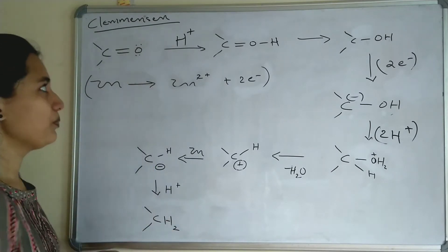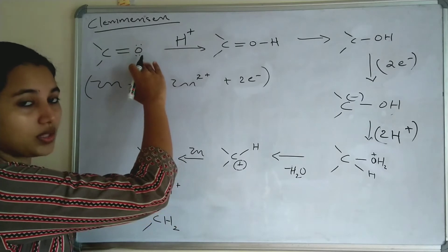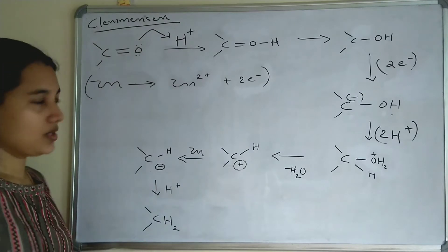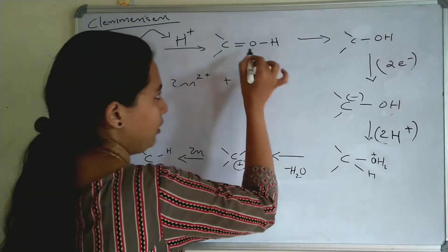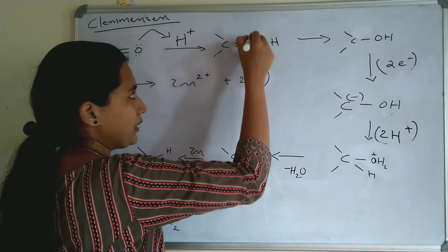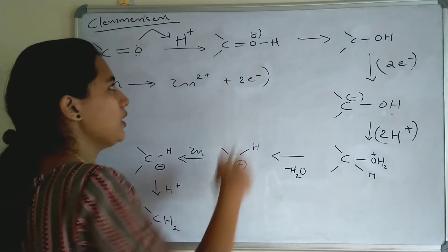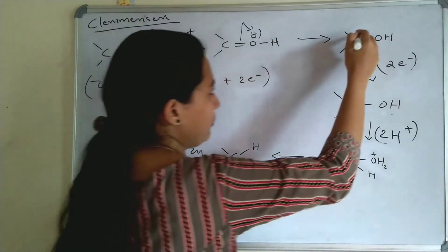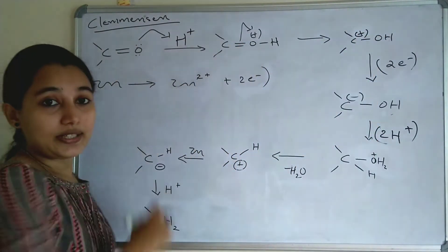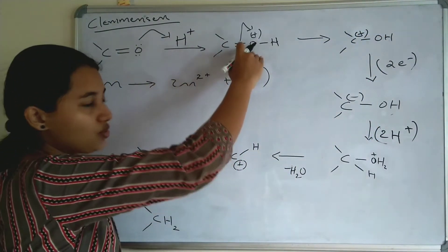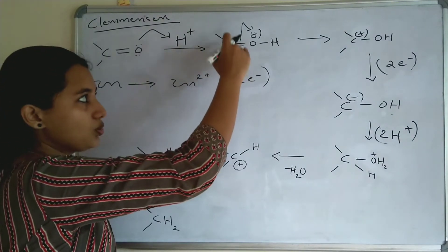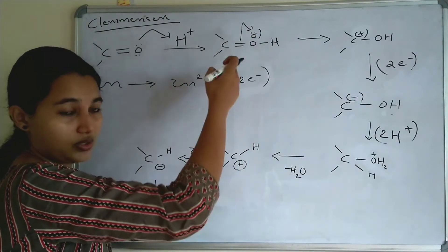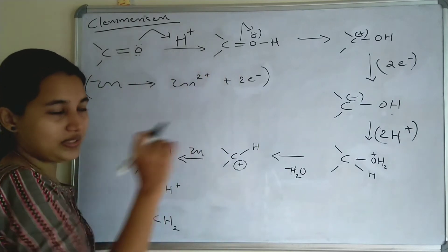The oxygen of this carbonyl compound has lone pairs. These lone pairs are donated to H⁺, forming an O-H bond. Oxygen gets a positive charge because it is donating electrons. Then a shift of electrons takes place from the C=O double bond — the bond's electrons shift to oxygen, neutralizing its positive charge. As a result, carbon gets a positive charge.